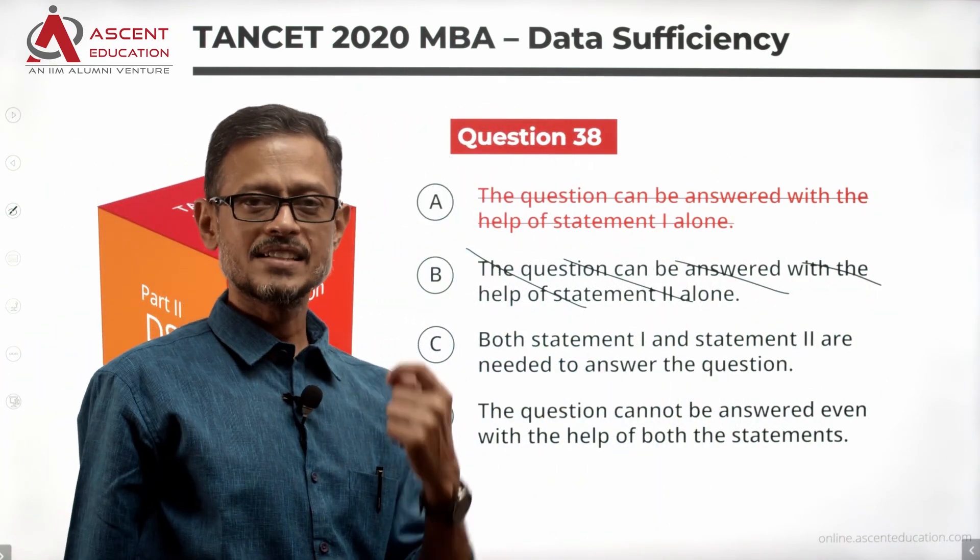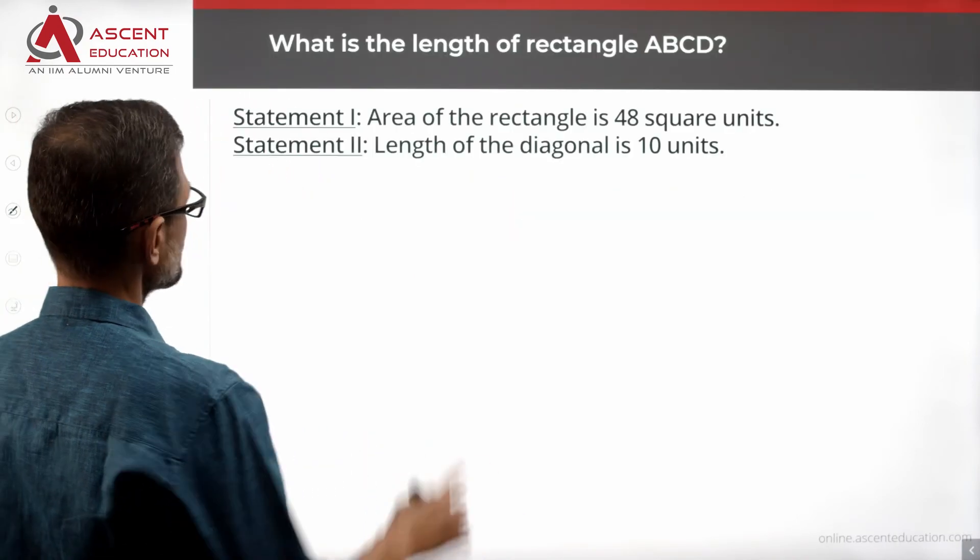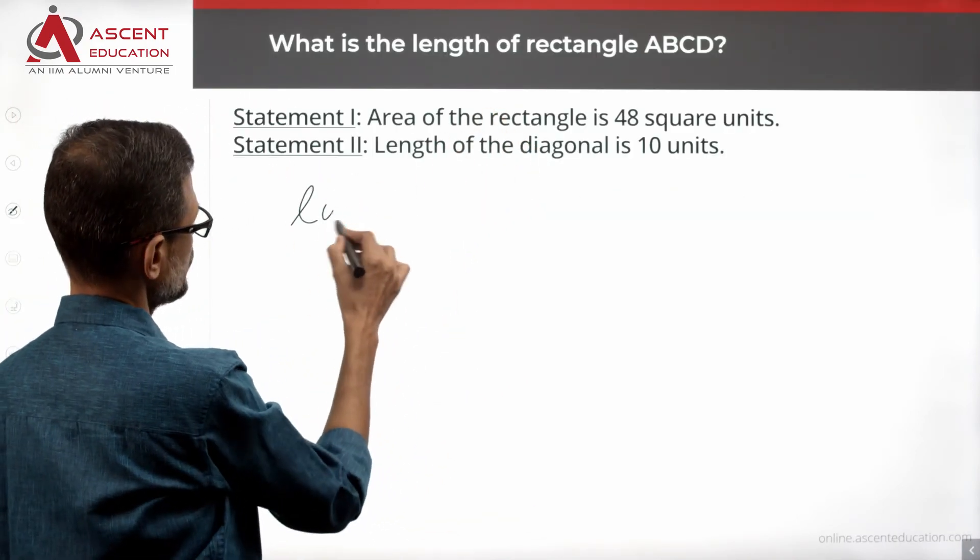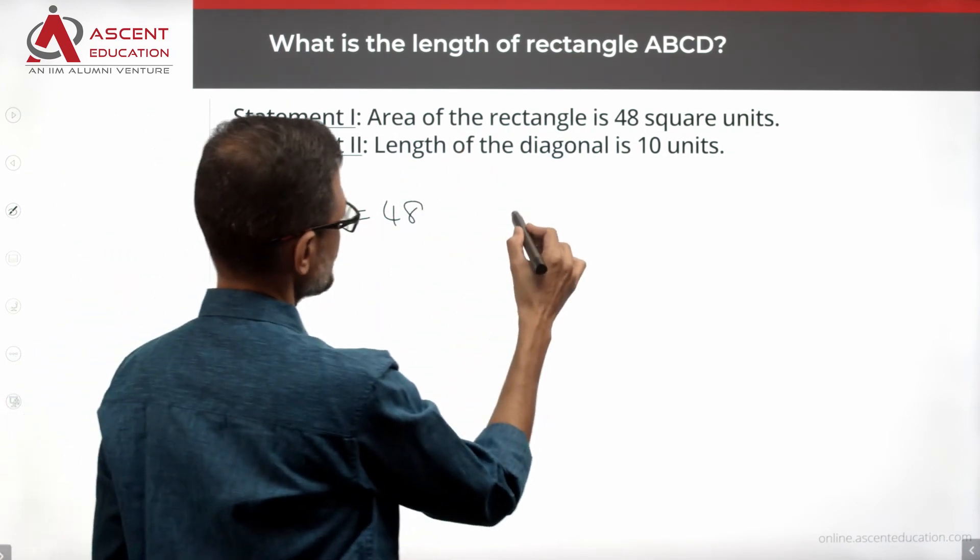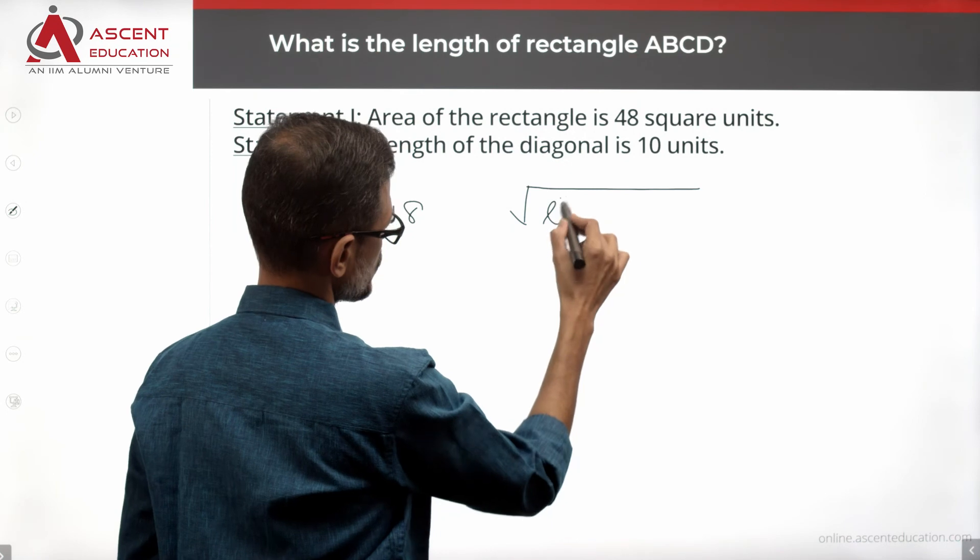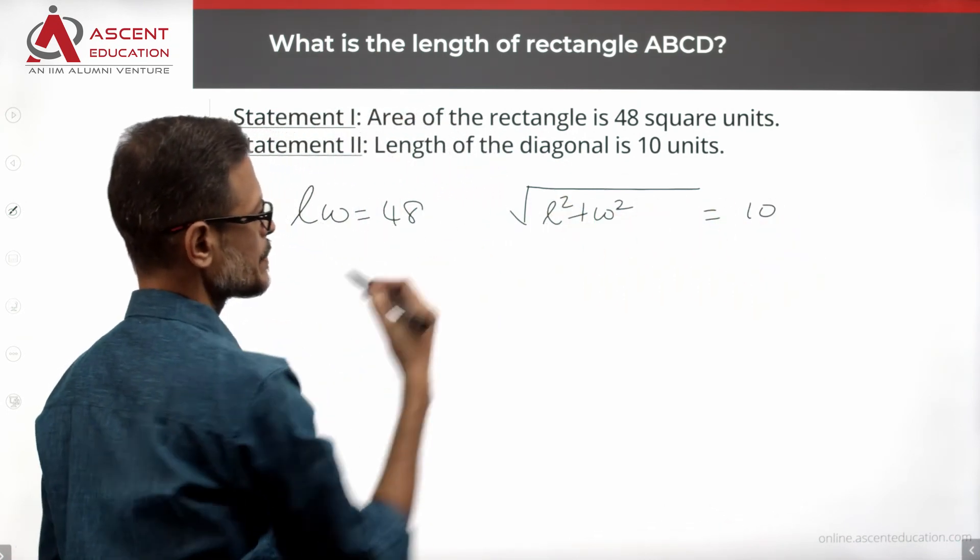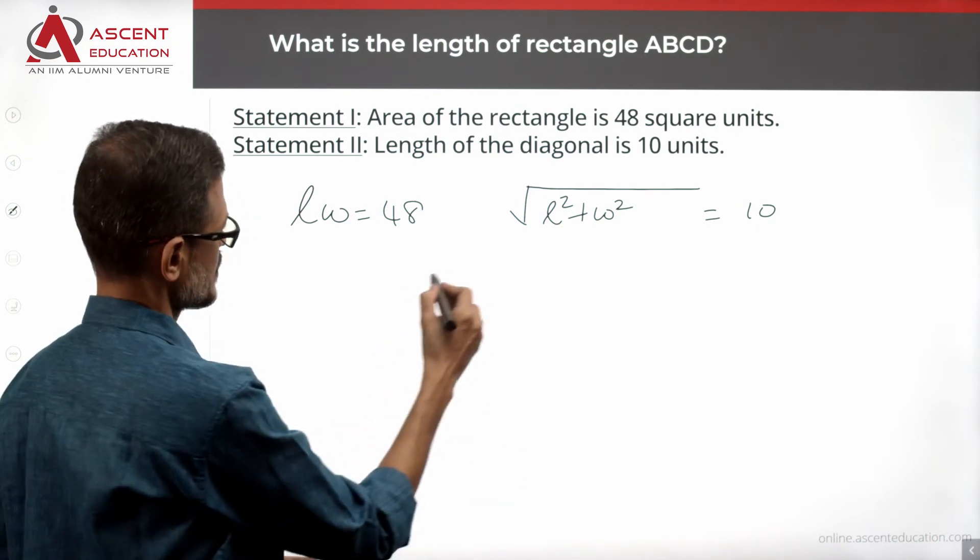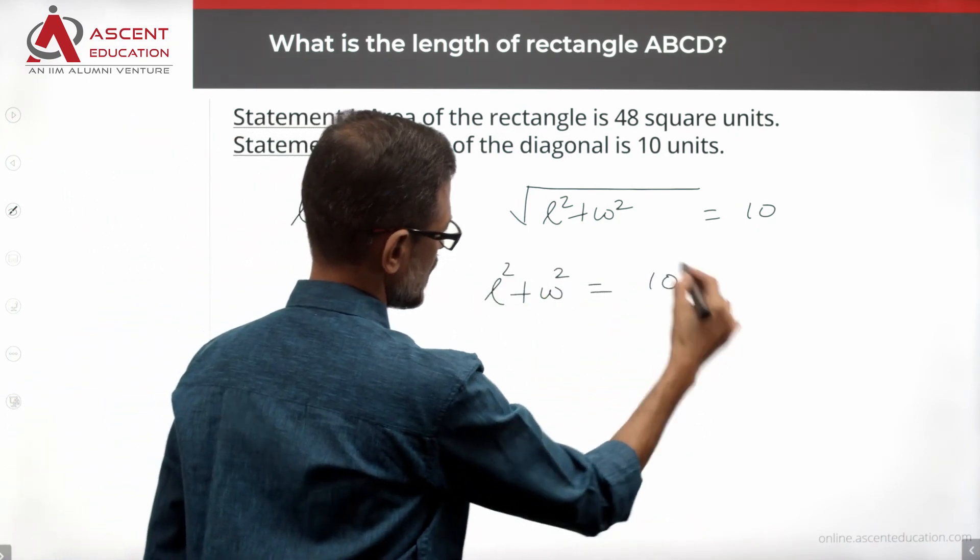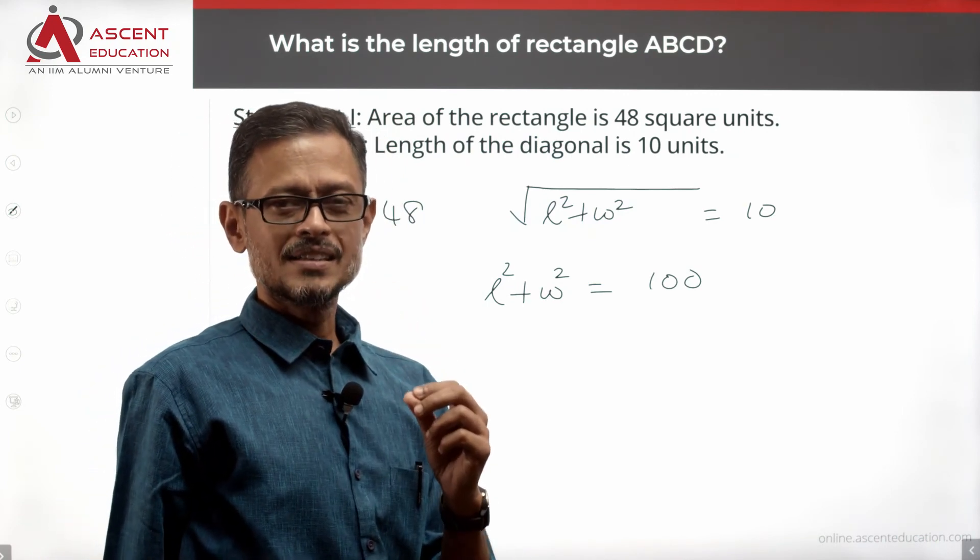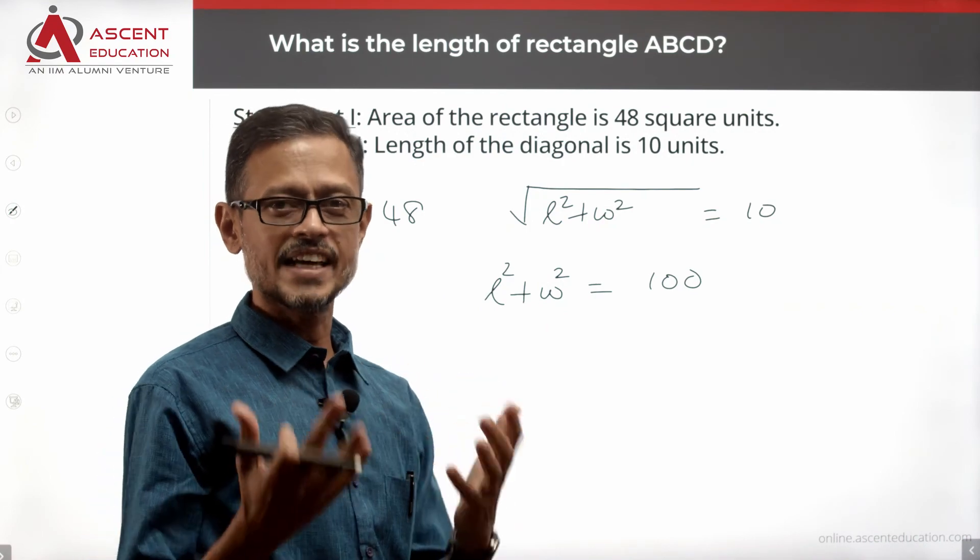Combine? Let us see whether we get a unique value. Combine the two statements. Statement 1 alone, we know LW is equal to 48. Statement 2 alone, we know square root of L square plus W square is equal to 10. Multiple ways to solve it. I am going to solve it in the manner where the computation is easiest.